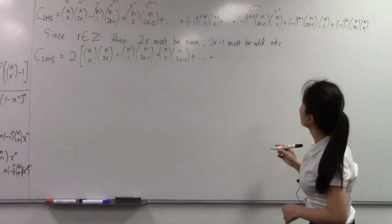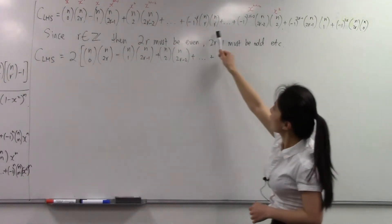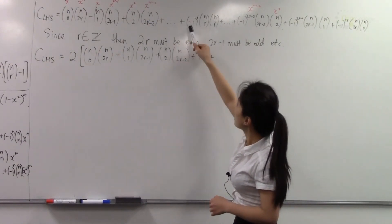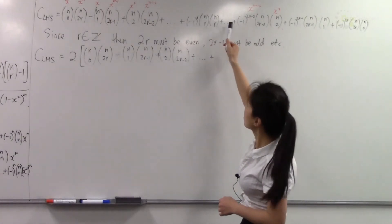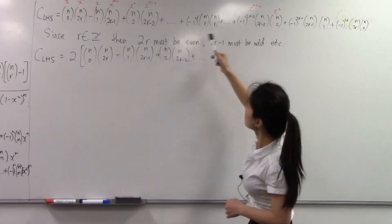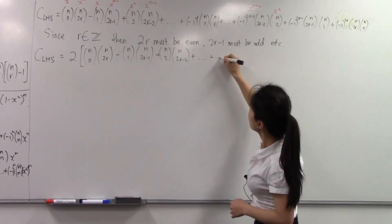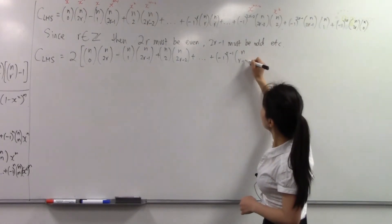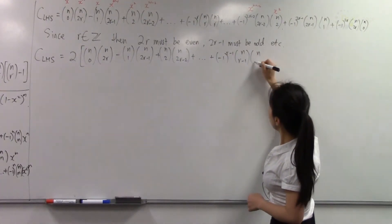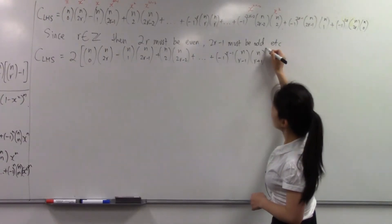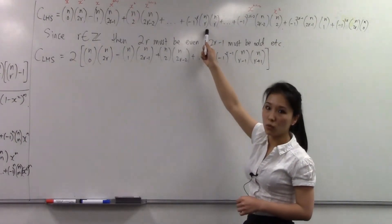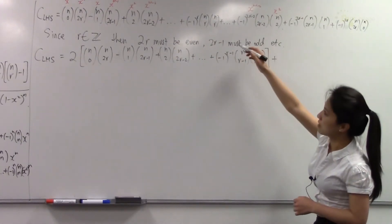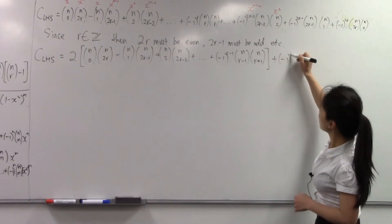Now, where does this end? The middle term is minus 1 to the power of r times n choose r times n choose r. The term before this equals the term after this, so this middle term does not double up. We have to leave it outside and add it by itself. The term before the middle equals minus 1 to the power of r minus 1, times n choose r minus 1, times n choose r plus 1.